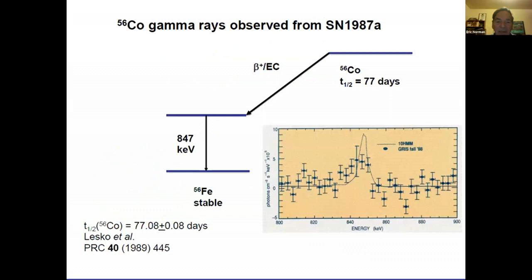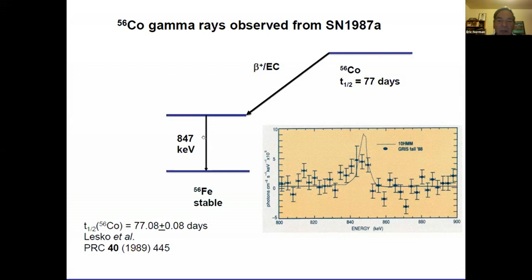We have other signatures that this sequence of nuclear reactions takes place in stars. From Supernova 1987A, gamma-ray observatories in space detected a line at 847 keV characteristic of the decay of cobalt-56. The alpha-particle sequence builds up to nickel-56, whose daughter is cobalt-56 with a 77-day half-life. When cobalt-56 decays it produces this 847 keV gamma ray, which we've studied extensively in the laboratory. And there it is, coming from supernova 1987A, confirming that the reaction sequence actually took place there.